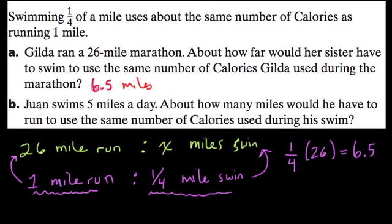Part B says Juan swims 5 miles a day. About how many miles would he have to run to use the same number of calories used during his swim? So we're using the same ratio—one-fourth of a mile swim. Now we know we're going 5 miles. How many miles would he have to run to keep this ratio going?